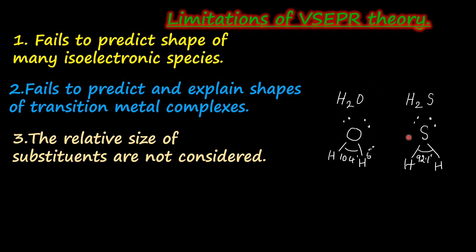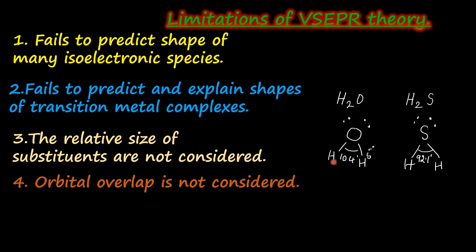As the size of the central atom increases, in spite of having the same number of bond pairs and lone pairs, the distance of the bonded constituents will be greater. Therefore, the bond angle decreases. So the fact that VSEPR theory fails to explain the shape of isoelectronic species is because the relative size of the substituents is not considered. Orbital overlap also is not considered. When bonds are formed, the hybridized orbitals overlap, and due to the difference in orbital overlap, a pi bond or sigma bond may be formed. That is not taken into account, and that is why in many cases VSEPR theory fails.